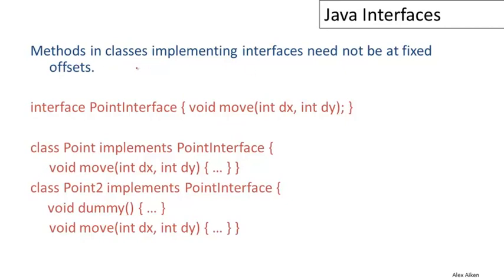And what makes interfaces less efficient? Well, the primary thing is that the classes implementing interfaces need not be at fixed offsets. In fact, we will not be able in general to assign methods in interfaces to fixed offsets inside of a class implementation or an object implementation.